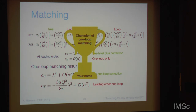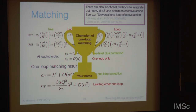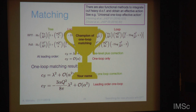Theories can become more complicated — this was a rather simple toy example. There are also alternative methods that can be used to perform this matching even at one loop, such as functional methods where you define this effective action and perform the matching that way. There's a nice series of works on the universal one-loop effective action which can tell you how that works if you're interested.